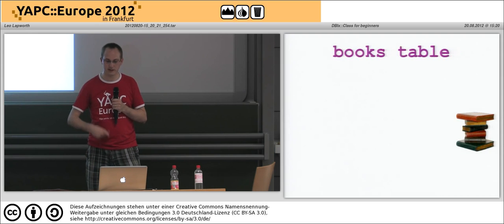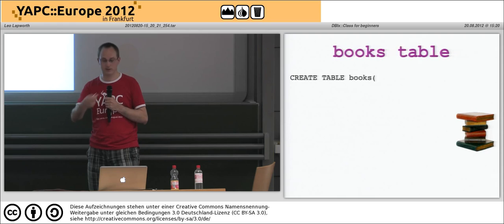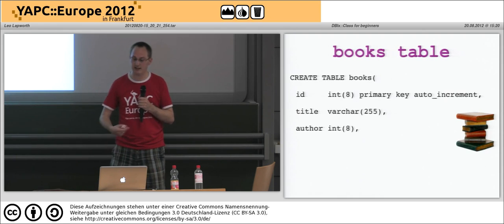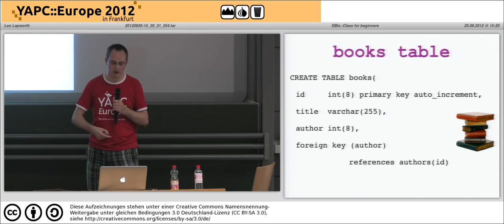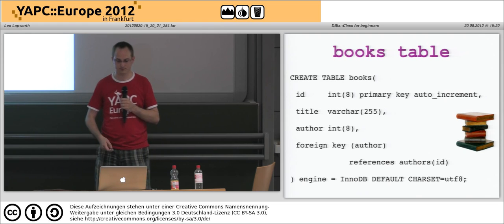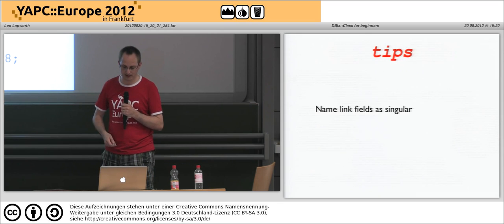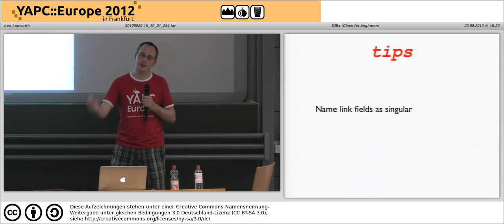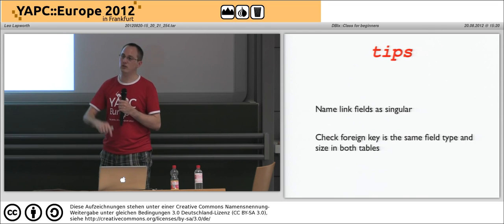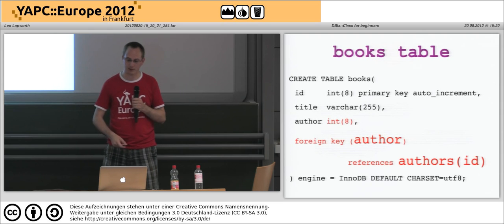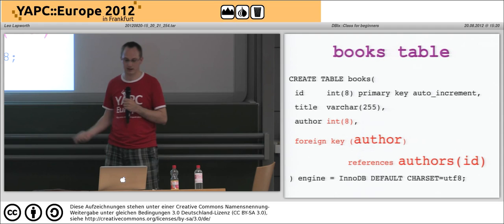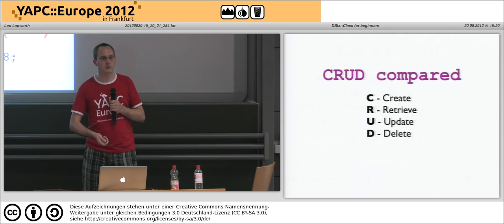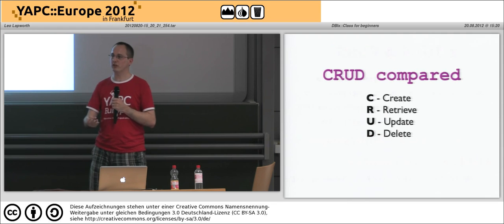We then need a very similar table for books. We create our books table, give it an ID, a title, an author field, and a foreign key called author which references our authors table. I always try to name the link field as singular and make sure the types match - in this instance author is an int(8) which matches the primary key on the authors table - and then set up the foreign key accordingly.